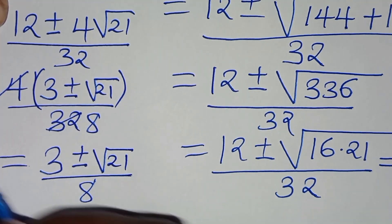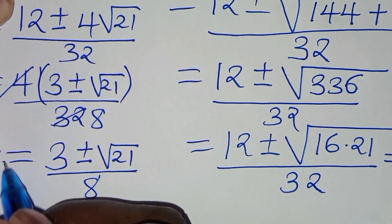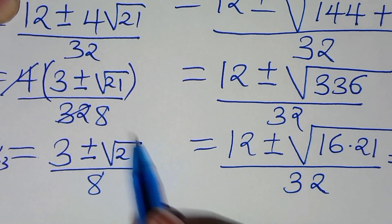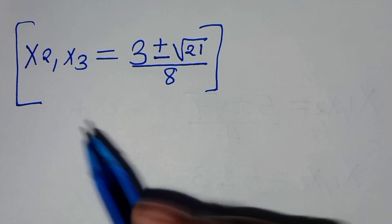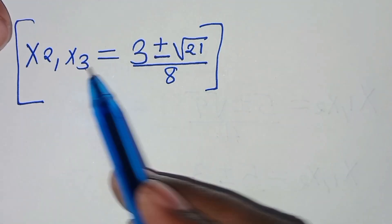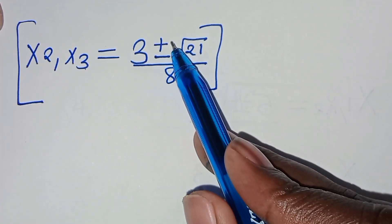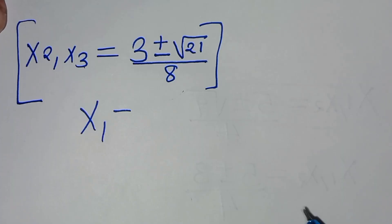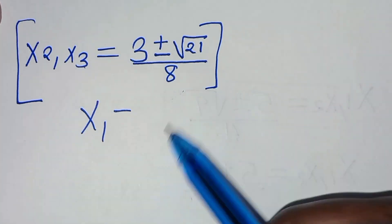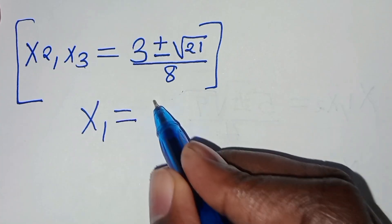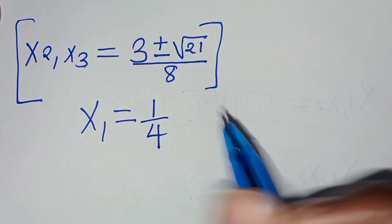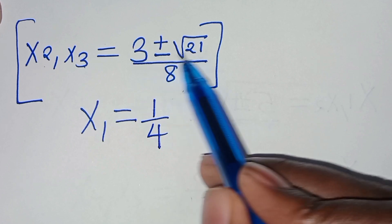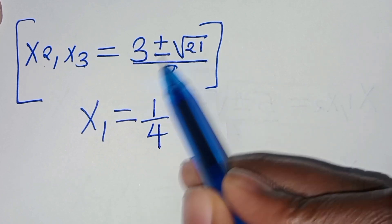So x2 and x3 equal (3 plus or minus the square root of 21) over 8. We have 3 solutions to this algebra problem: x1 is 1 over 4, and x2, x3 are (3 plus or minus the square root of 21) over 8.